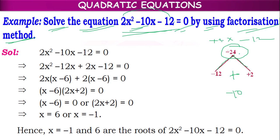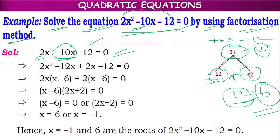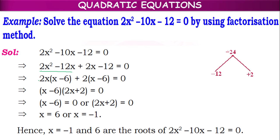So −24 we can write as −12 × 2, because we need −10. For the bigger number, minus is to be kept; for the smaller number, plus is to be kept, so that −12 + 2 = −10, and −12 × 2 = −24. So this is AC and this is B. According to step one, we have split AC into two parts whose sum is equal to B. So now: 2x² − 12x + 2x − 12 = 0, where the middle term −10x has been split into −12x + 2x.